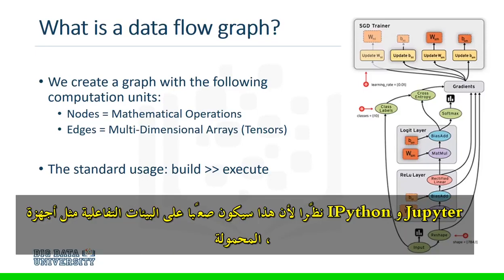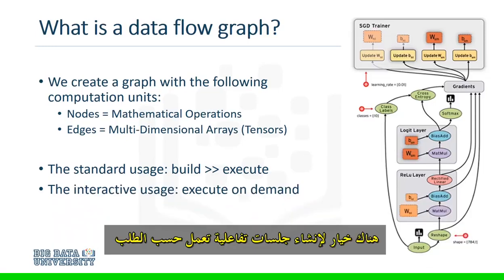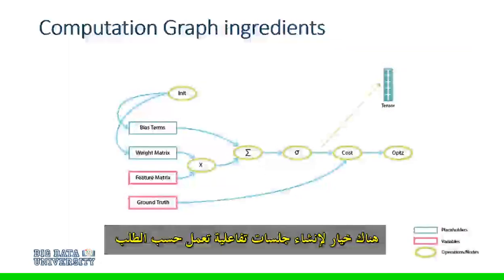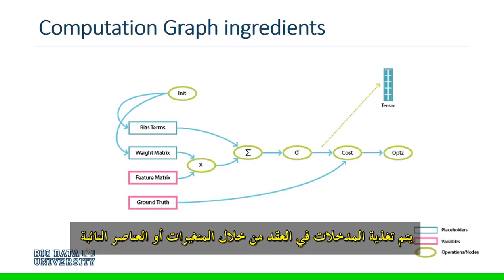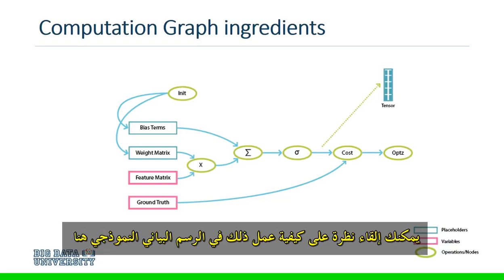Since this would be difficult for interactive environments like IPython and Jupyter Notebooks, there's an option to create interactive sessions that run on demand. Once the graph is built, an inner loop is written to drive computation. Inputs are fed into nodes through variables or placeholders. You can take a look at how that might work in the sample graph here.